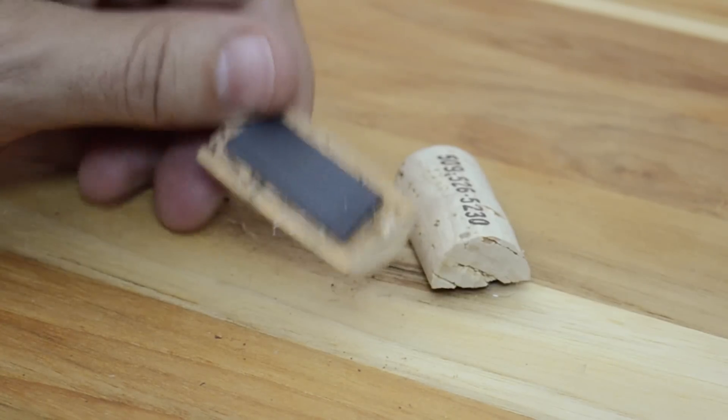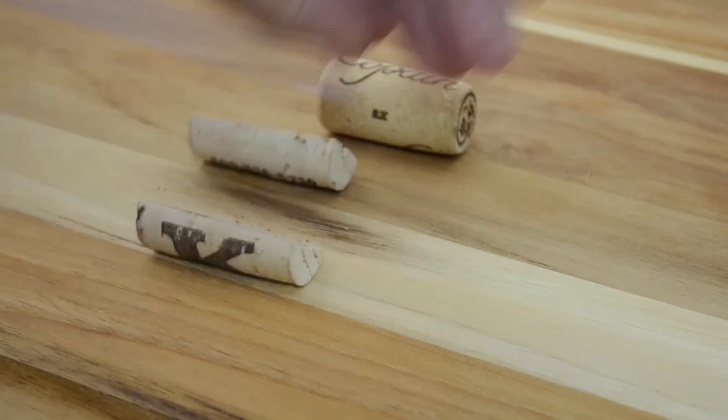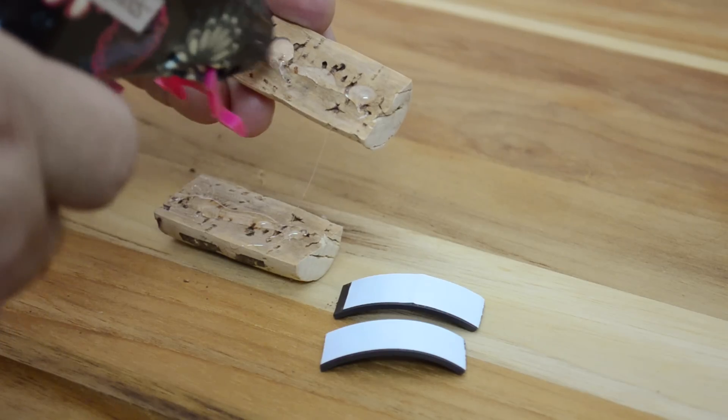Now how about some awesome fridge magnets? Simple. Cut some corks in half and hot glue simple magnets to the back. You can typically pick those up at any hardware store. Now when you place these on the fridge, you can stand out from the crowd and boast that you consume far too much wine.